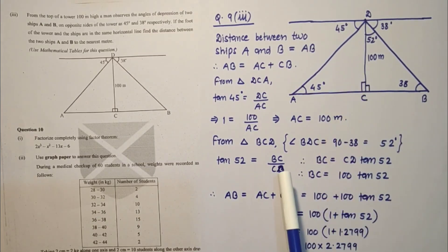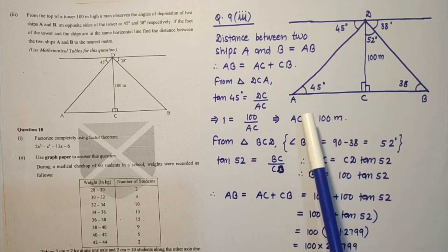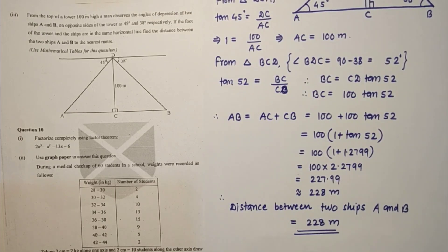Similarly for this triangle, tan 52 is BC by CD. BC by CD, tan 52 value is 1.2799. Adding, nearest meter is 228 meters. So the distance between two ships A and B will be 228 meters. This is the answer, 228 meters.